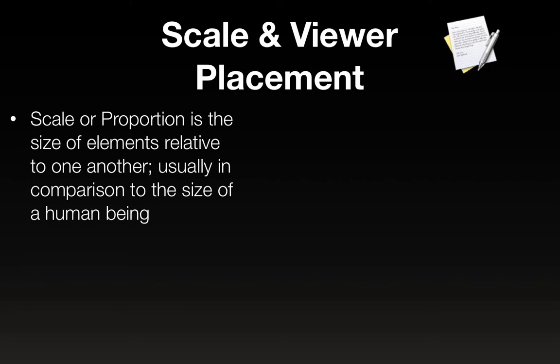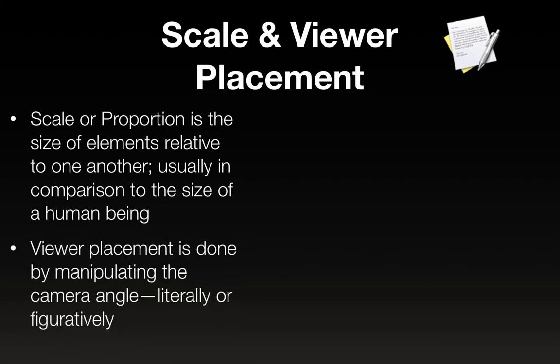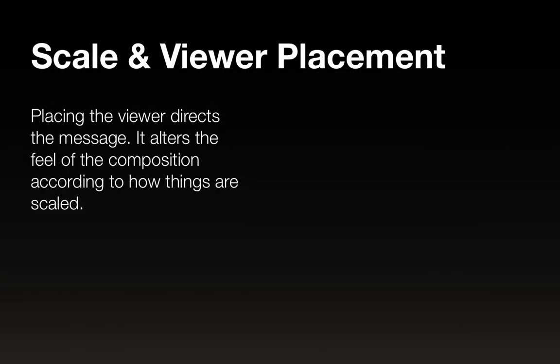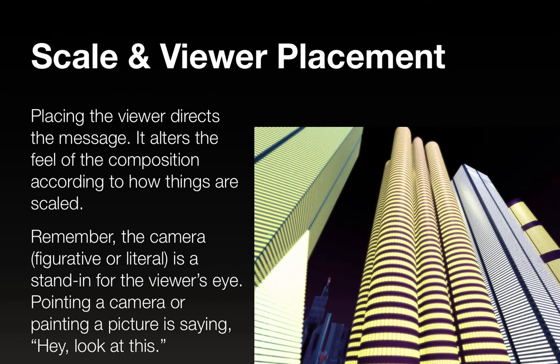Scale and viewer placement is very important. You've got different ways to place the viewer, and that can really end up making a real big impact on the composition. Scale or proportion is the size of the elements relative to one another, usually in comparison to the size of a human being. Most of the time when we're talking about art concepts, we're comparing it to the form or size of a human being. Viewer placement is done by manipulating the camera angle, whether that means the literal camera angle with an actual camera, or the figurative camera angle if you're drawing a scene or making a 3D rendering. Different camera angles kind of evoke different emotions. Placing the viewer directs the message and alters the feel of the composition.